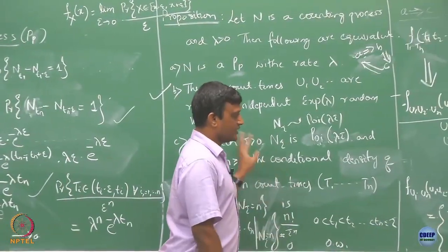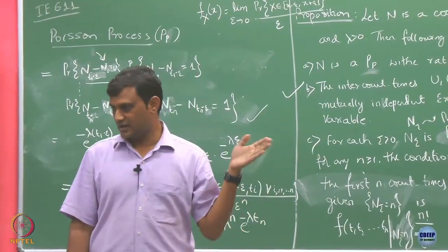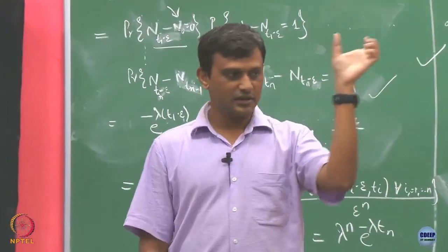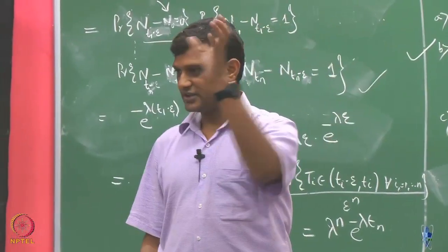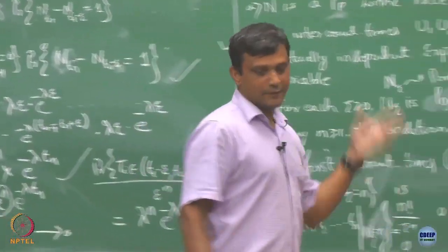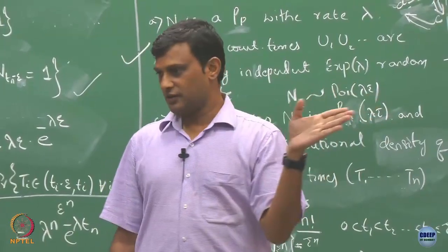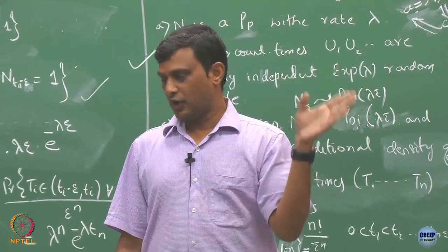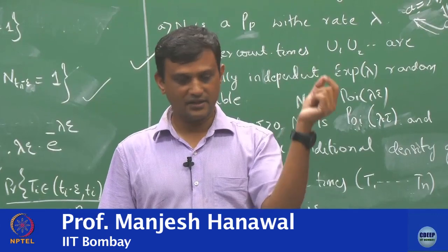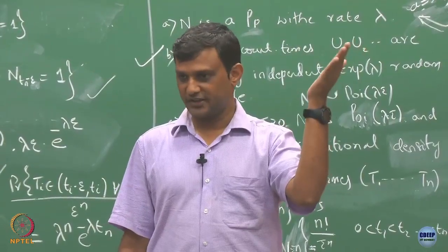So as you can see, if you have a Poisson process and look at the intercount times, the collection of intercount times are exponentially distributed with the same rate lambda and are independent. In other words, saying I have a Poisson process with rate lambda is equivalent to saying I have a random process whose intercount times are independent and each exponentially distributed with rate lambda — they refer to the same Poisson process with rate lambda.